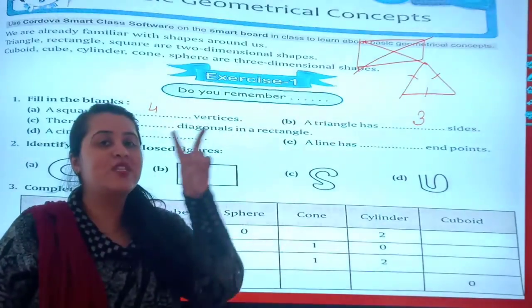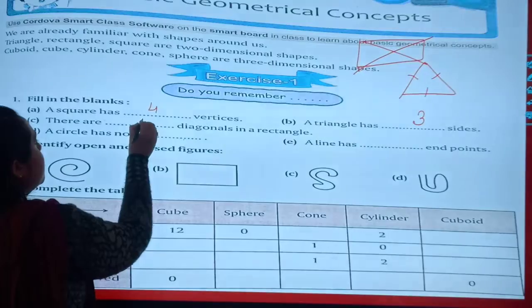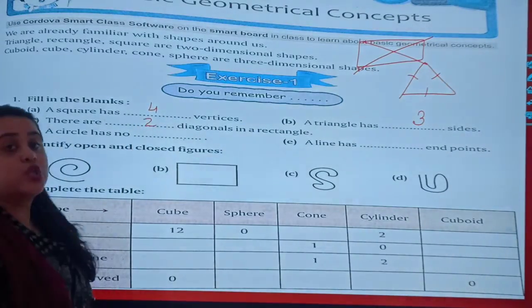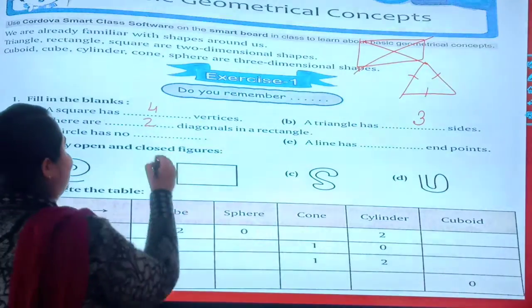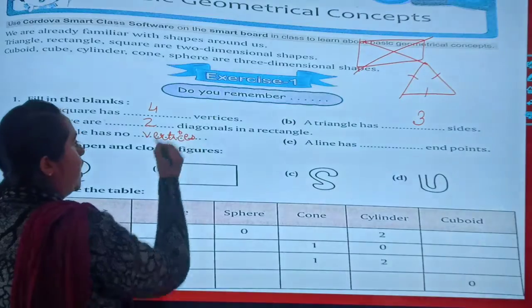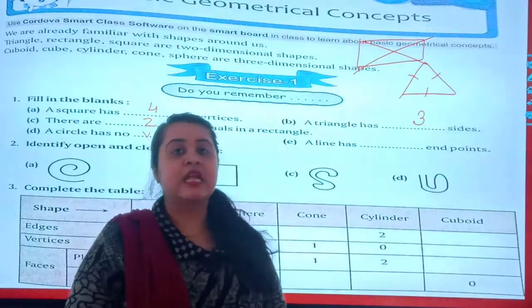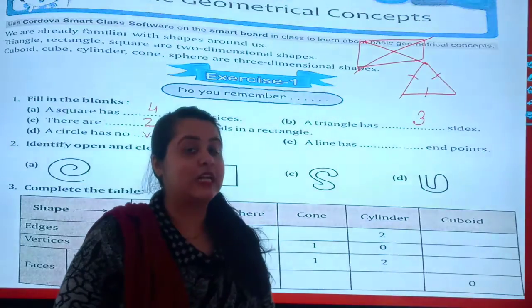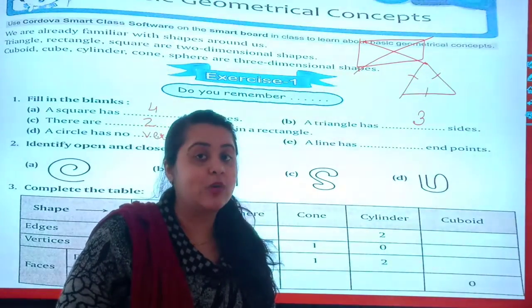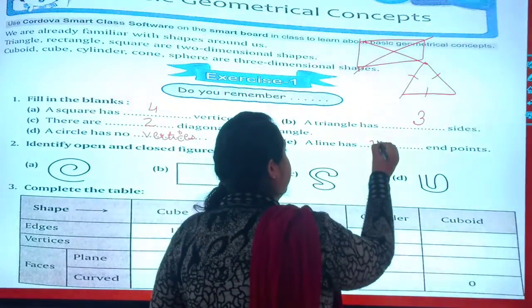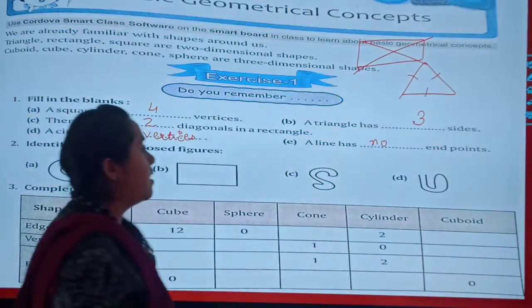A circle has no vertex. A line has dash end points. How many? We just saw, what does a line have? No end points.